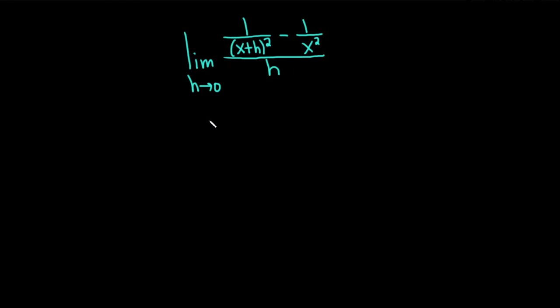Hello, in this video we're going to work out a limit. We have the limit as h approaches 0 of 1 over (x plus h) all squared, minus 1 over x squared, all of that being divided by h. Let's go ahead and carefully work through this solution.